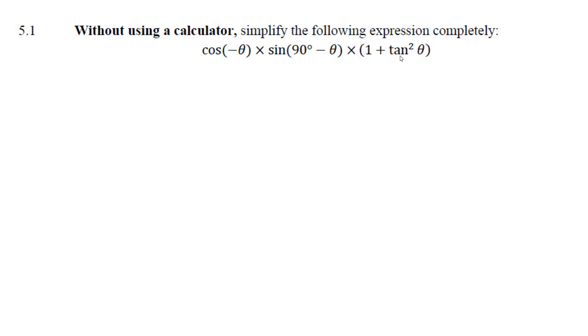We know that tangent squared is sine squared over cosine squared, so that's our first part. This becomes cosine theta, that becomes cosine theta. Tangent squared is sine squared over cosine squared, so there's the first three things we have to do.